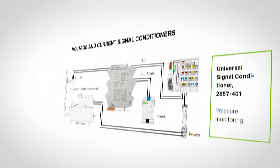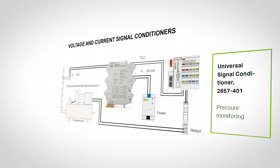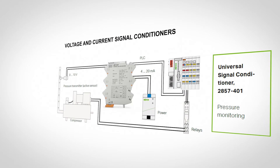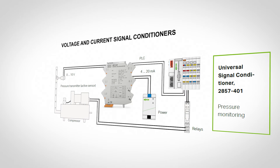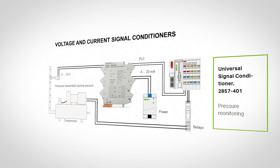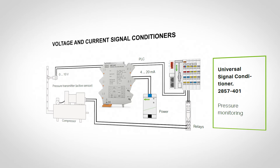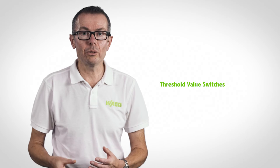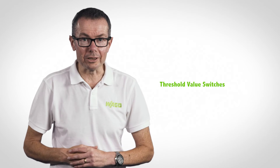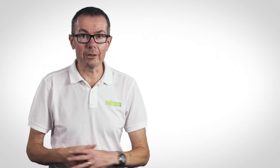Current and voltage signal conditioners: these are simply signal converters. They can be used where, for example, a pressure transducer has a 0 to 10 volt output but needs to feed a PLC that only has a spare 4 to 20 milliamp analog input.